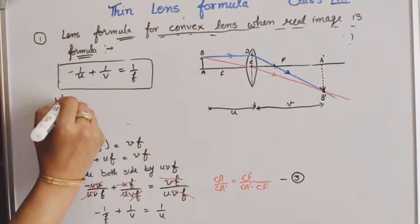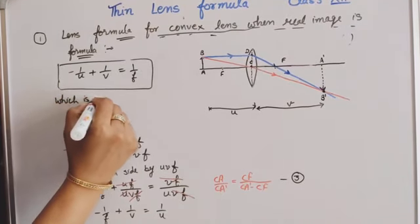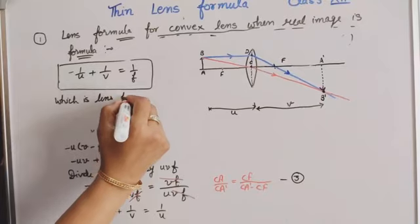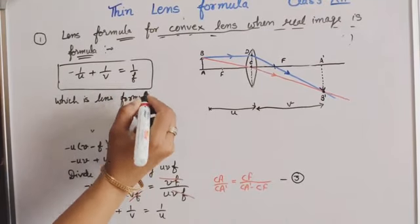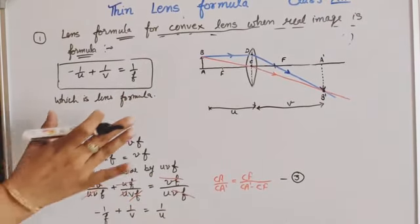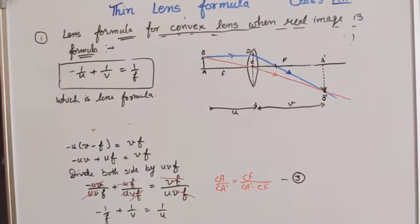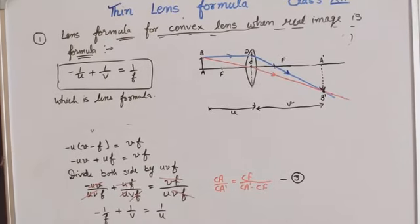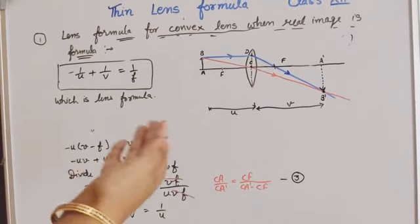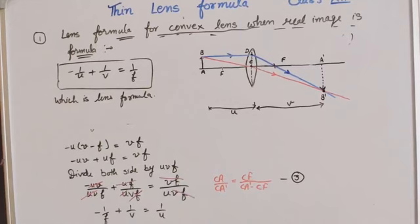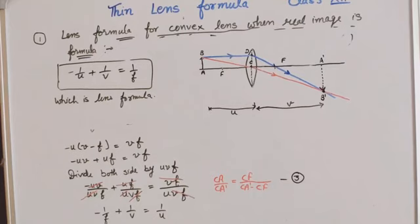This is the lens formula for a convex lens when a real image is formed. If you have any problem with the diagram or the mathematical portion, you can ask in the comment section or WhatsApp me. If you found the video helpful, please like and share. Thank you so much.